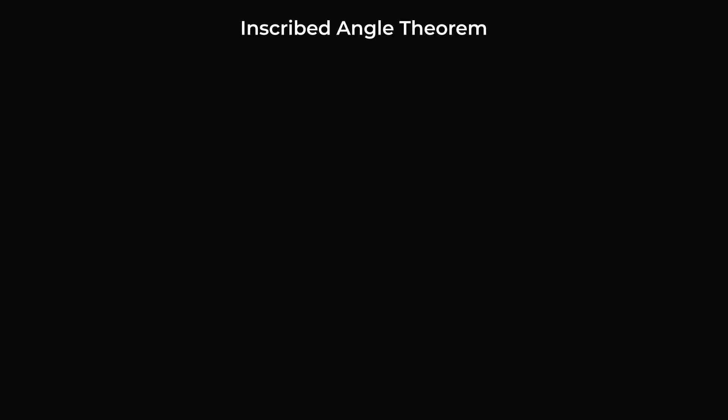I'll review a quick concept of the inscribed angle theorem. Suppose we have a circle with the central angle that's equal to 2 theta. Then the arc that the central angle subtends will have the same measure, so it will also be equal to 2 theta.